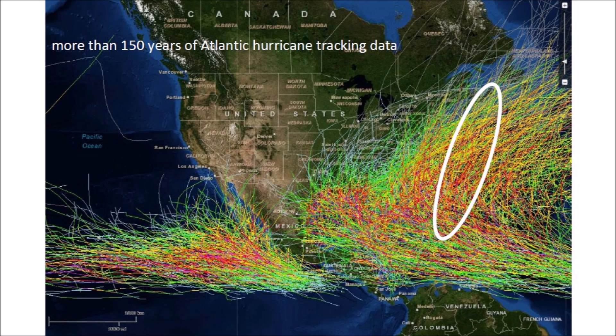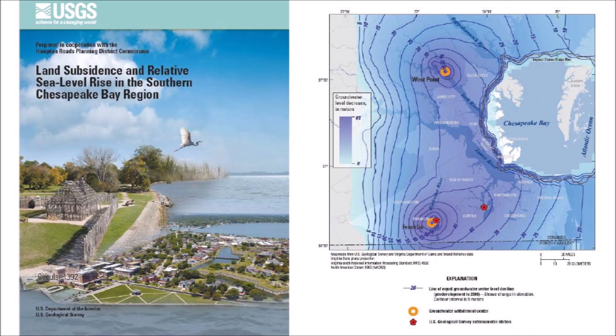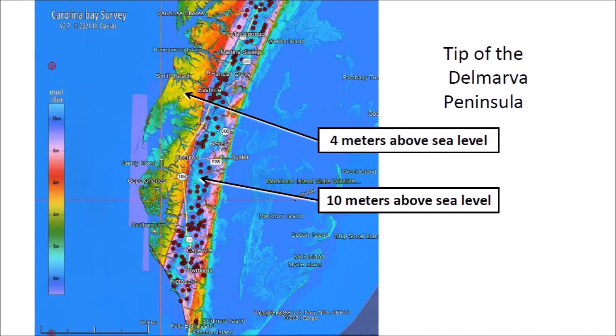Therefore, it is worthwhile to examine the LiDAR images along the east coast of the United States to see if there are any Carolina Bays at or below 4 meters above sea level. A report published by the U.S. Geological Survey in 2013 indicated that the southern Chesapeake Bay region is experiencing land subsidence and rising water levels due to global sea level rise and extensive groundwater pumping in the region. This image of the tip of the Delmarva Peninsula in the Chesapeake Bay region has no Carolina Bays in the terrain that is at 4 meters above sea level. All the bays are in the terrain that is 10 meters above sea level.